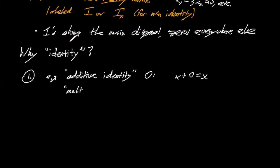Because when you add zero to x it doesn't change it. And there's also the multiplicative identity, one. When you multiply something times one it doesn't change it. So something that doesn't change things, it's maybe called an identity.